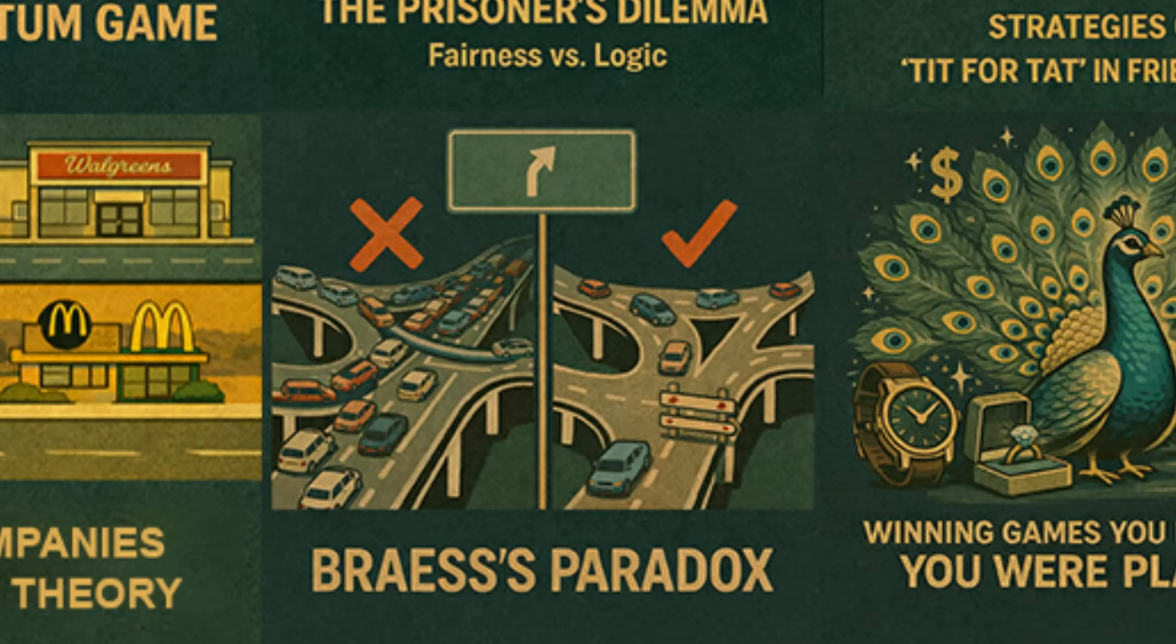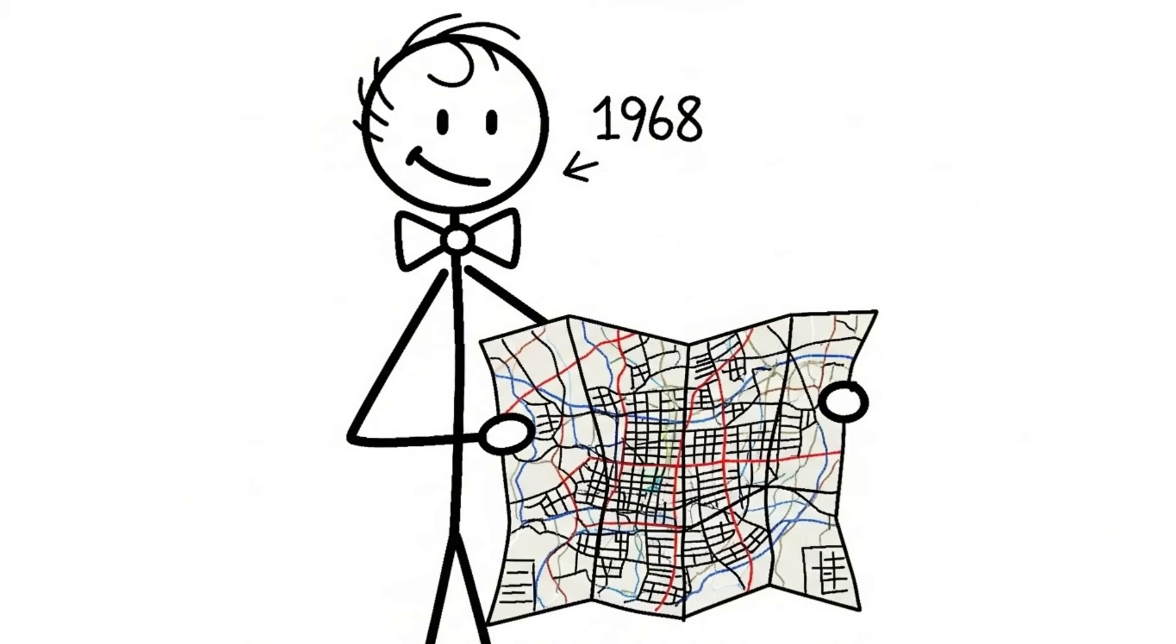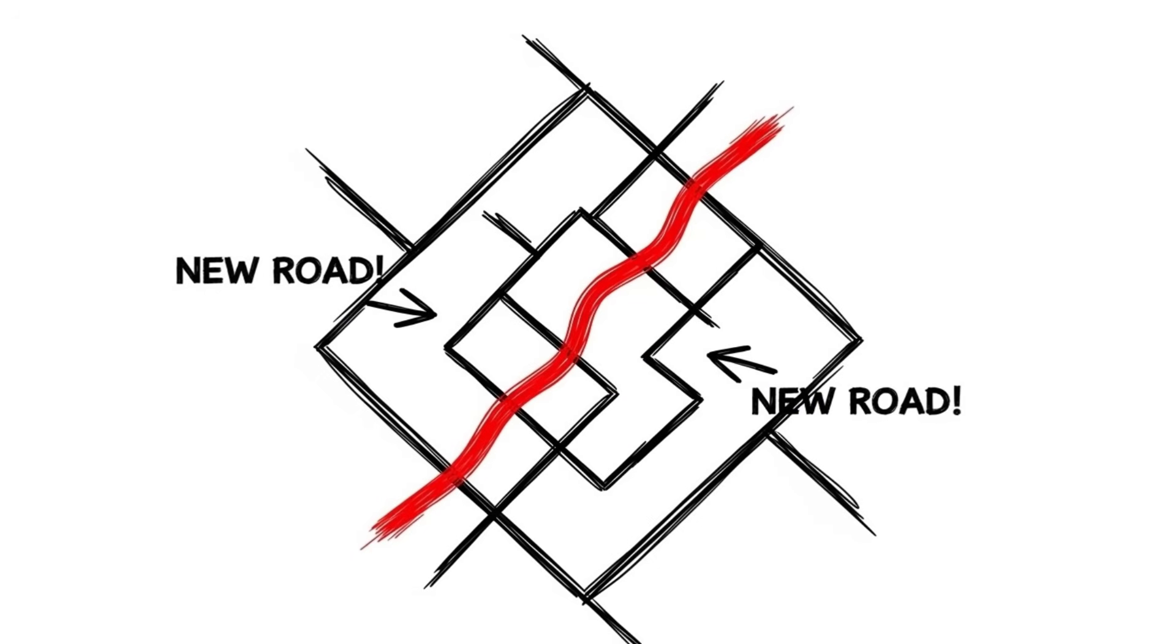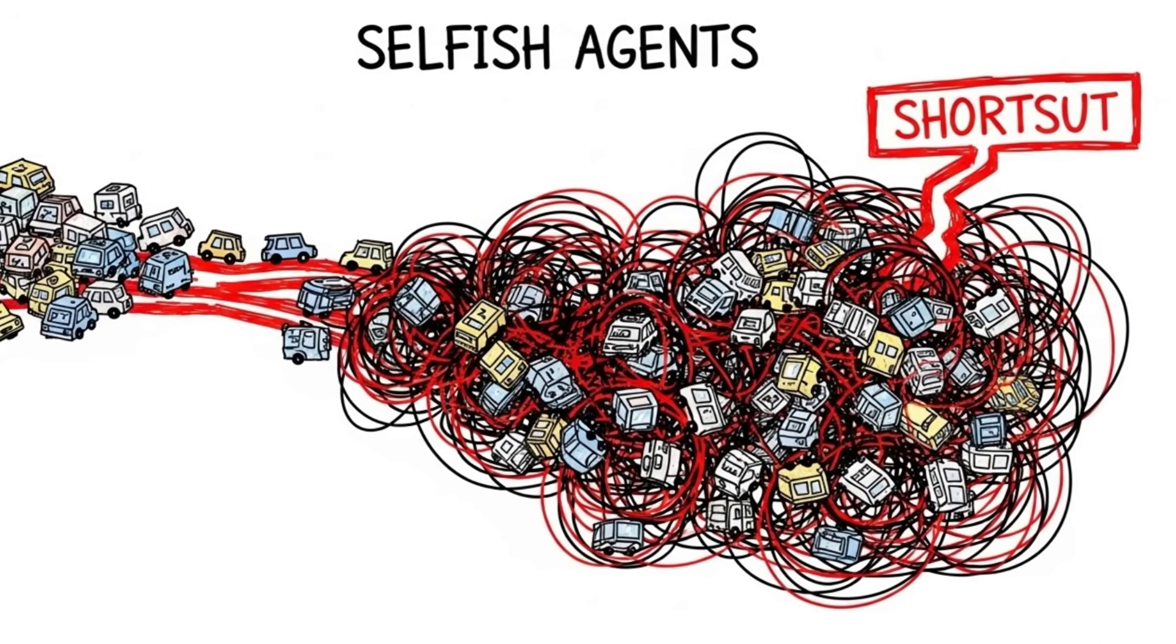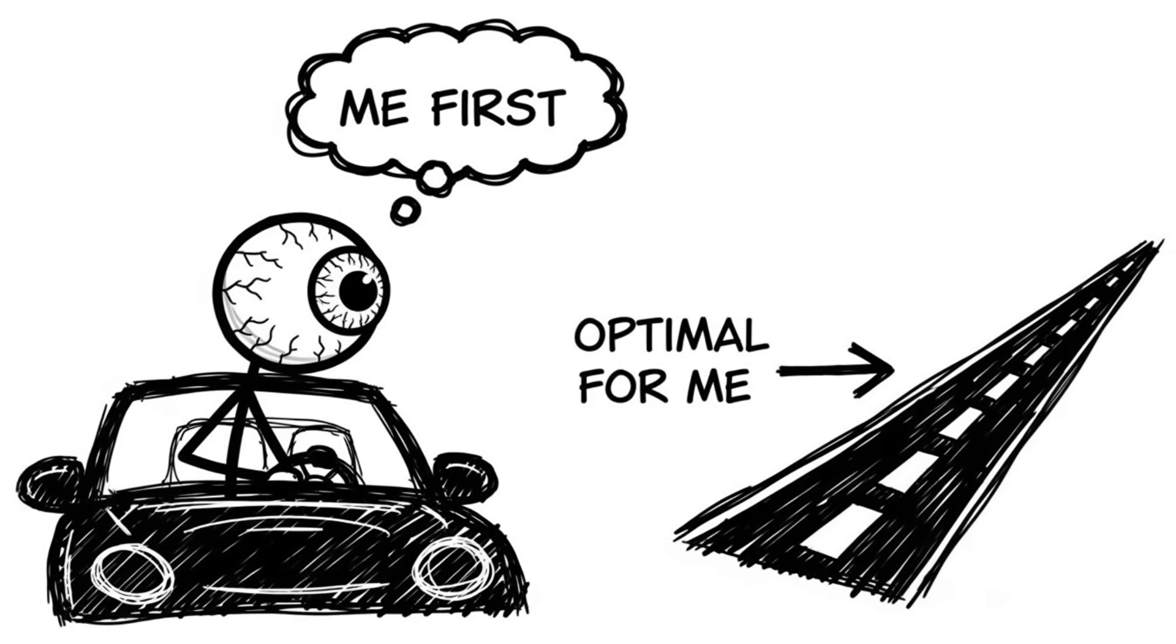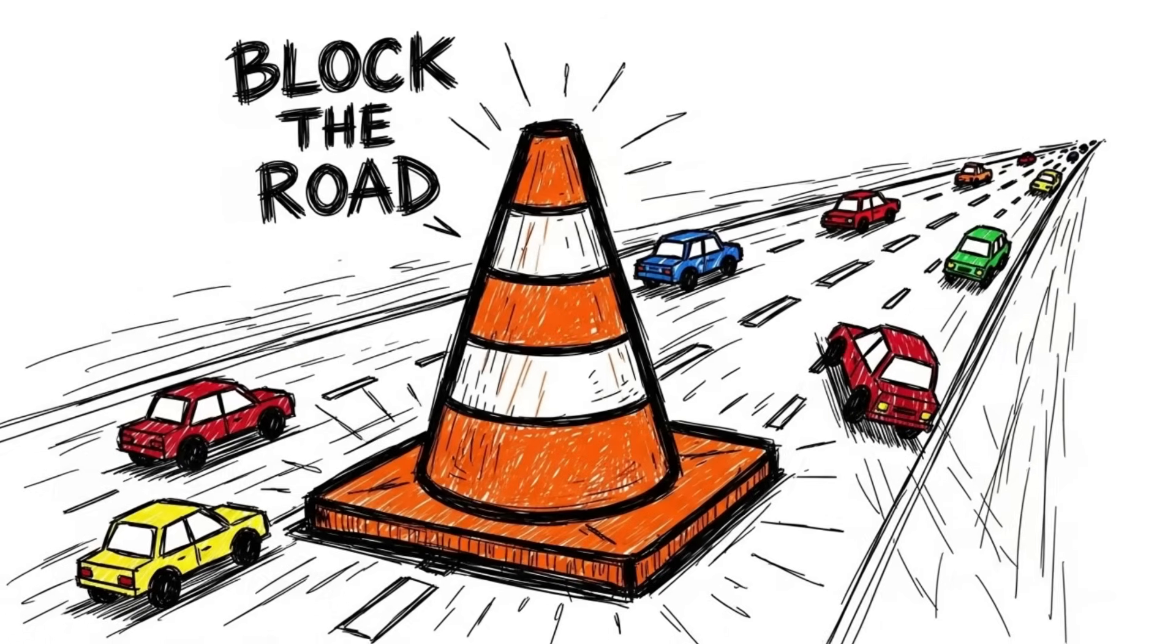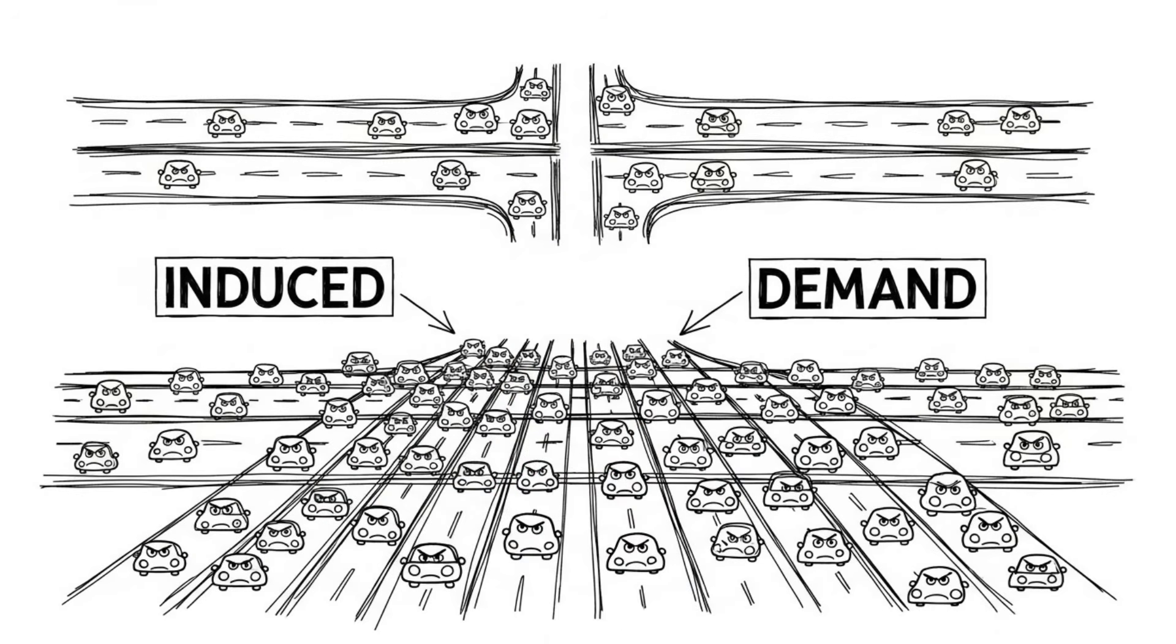Braess's paradox. Why closing streets improves traffic. In the late 1960s, a German mathematician named Dietrich Braess discovered something that sounds impossible. If you add a new road to a congested traffic network, traffic often gets worse. Conversely, if you block off a major road, traffic often gets better. This breaks our brain's logic. More capacity should mean better flow, right? But traffic is a game played by selfish agents. When a new shortcut road opens, every driver tries to take it to save time. This mass defect overwhelms the new road, causing a bottleneck that backs up the entire system, including the old roads. The selfish desire to find the optimal individual route destroys the efficiency of the collective network.